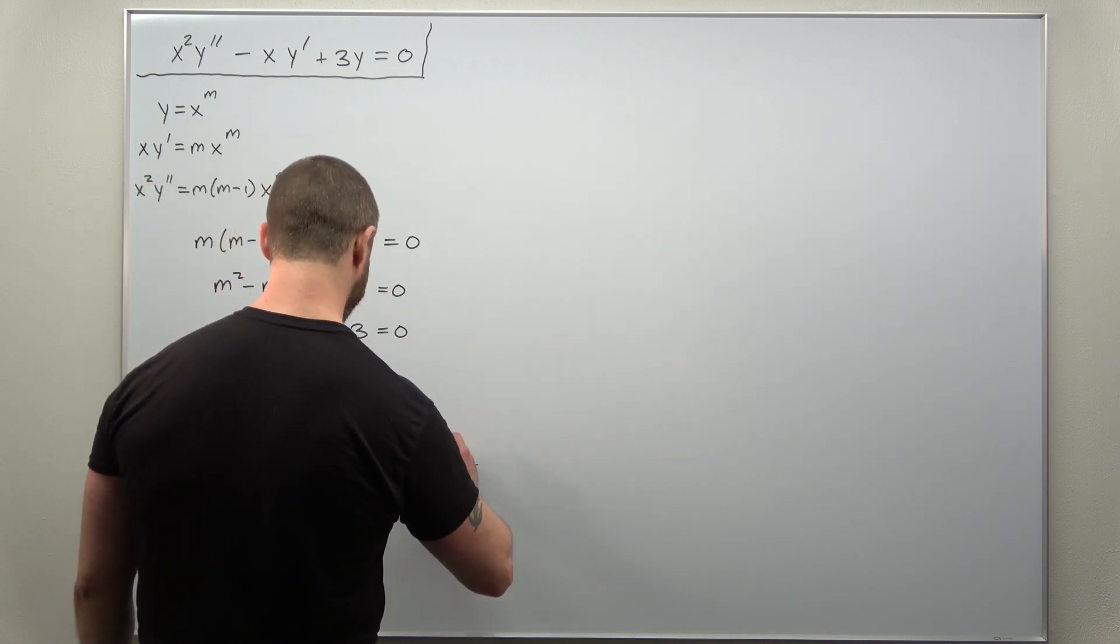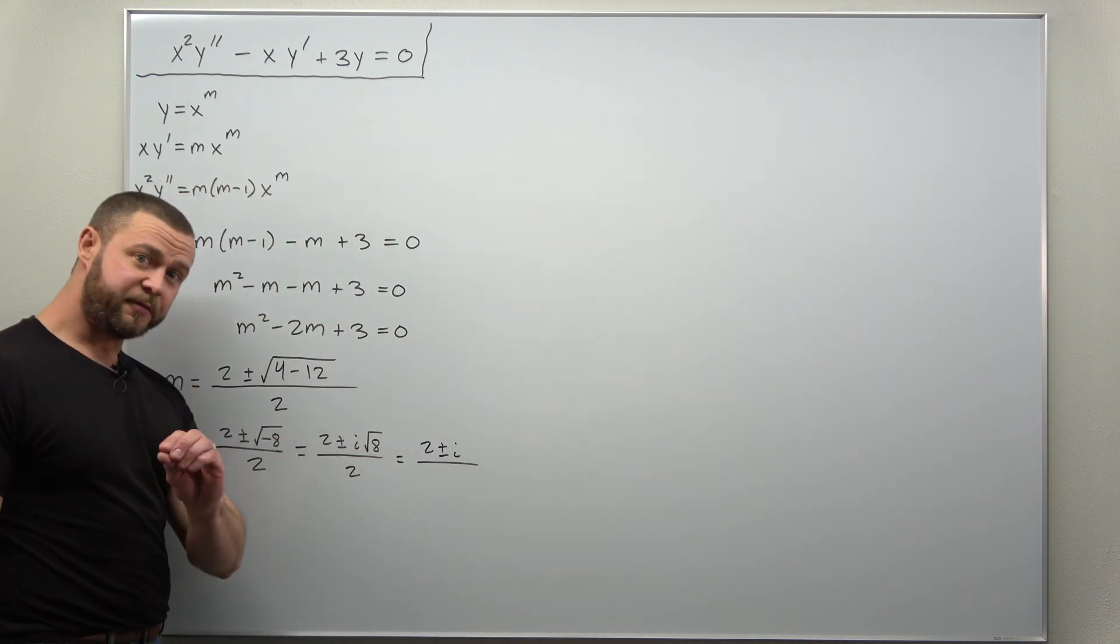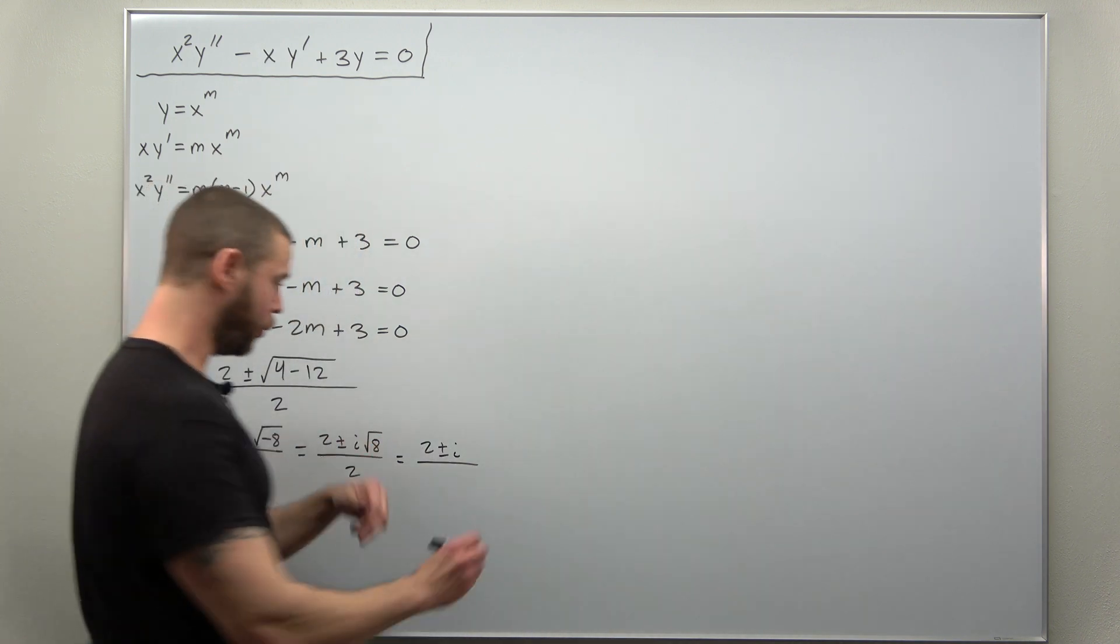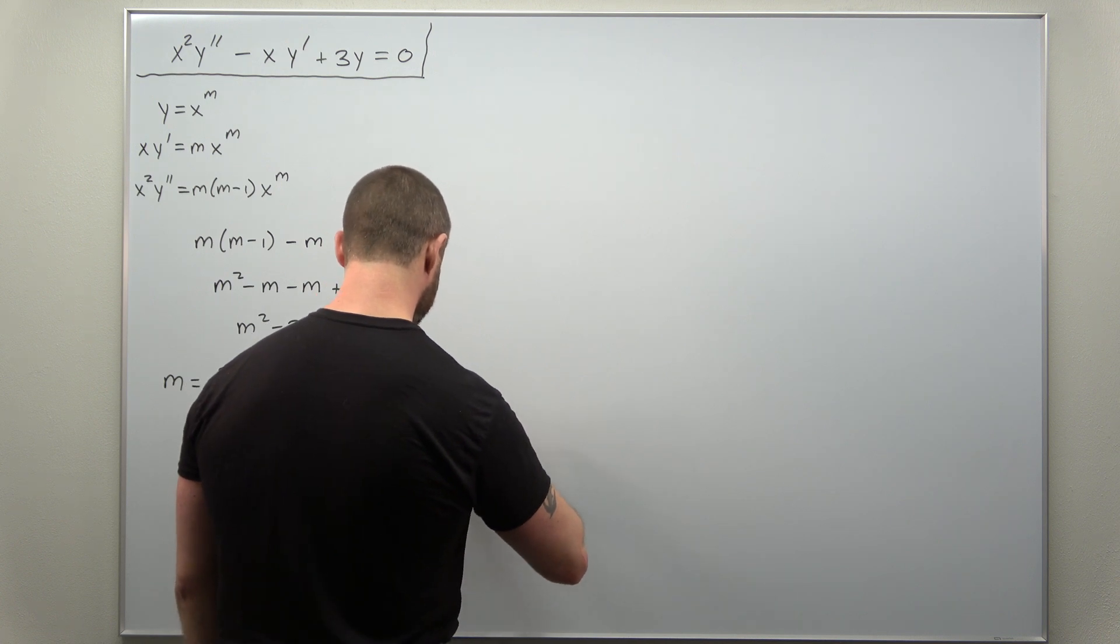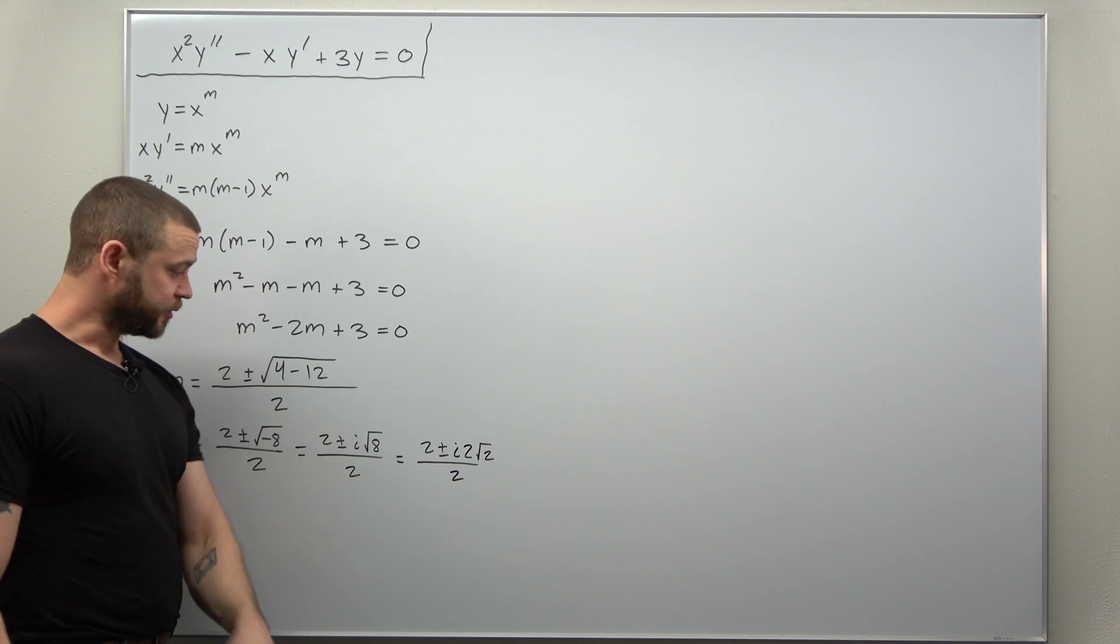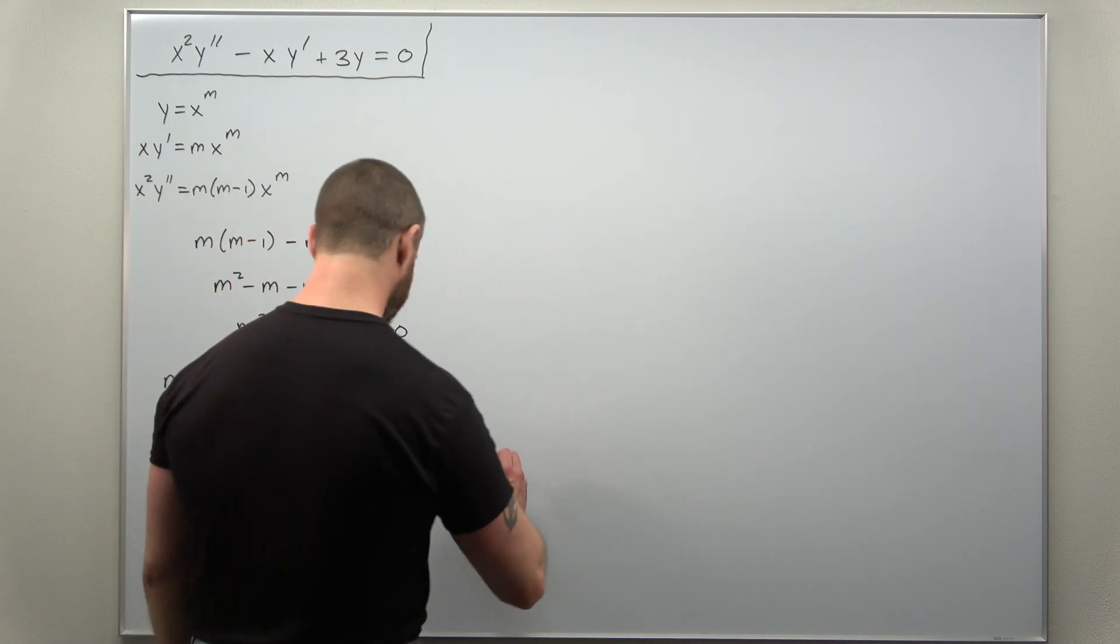You can rewrite that as square root of 4 times square root of 2 or 2 square root of 2 all over 2. And it looks like you can cancel out those factors of 2.